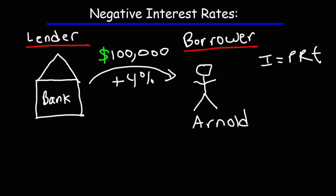I is interest, P is the principal, R is the interest rate as a decimal, T is the time. So in one year, his debt is going to increase by $4,000. That's how much interest he's going to owe after one year. So his total debt is going to be $104,000. So in a positive interest rate environment, the debt of the borrower goes up due to interest if no payments are made.